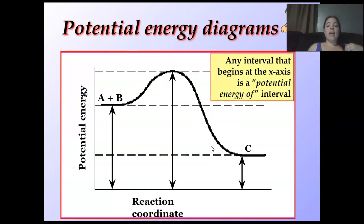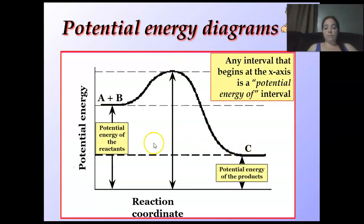Any interval that begins at the x-axis is a potential energy of the interval. This is the x-axis right down here. These are potential energies all the way up. This is the potential energy of AB. This is potential energy. We'll get to that in a second. Potential energy of the product. Reactants, products. This middle is called the activated complex. Activation energy.